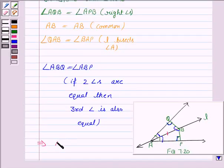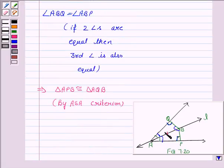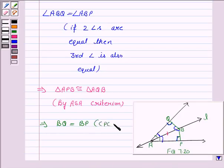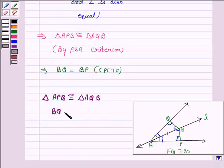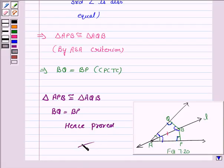By ASA criteria, triangle APB is congruent to triangle AQB. And since corresponding parts of congruent triangles are congruent, BQ is equal to BP by CPCT. Hence, we have proved that triangle APB is congruent to triangle AQB and BQ is equal to BP. The result is proved. This completes the question. Hope you enjoyed the session. Goodbye and take care.